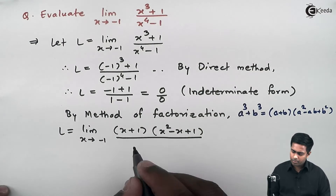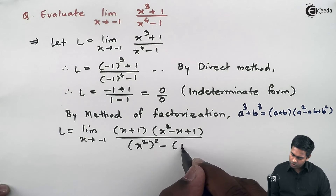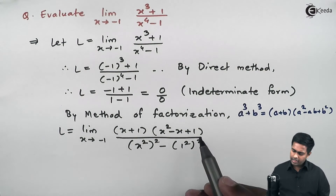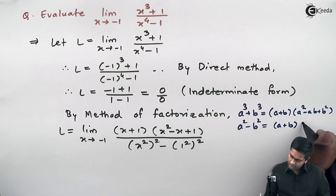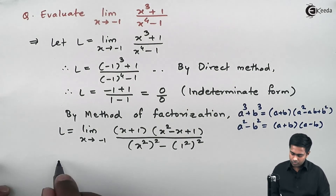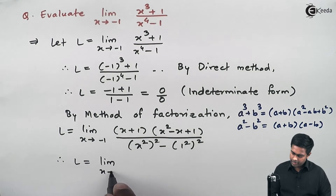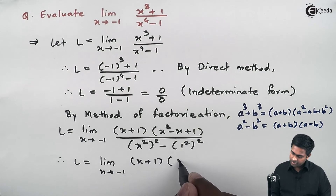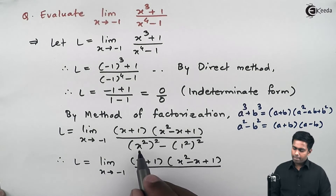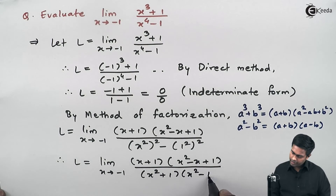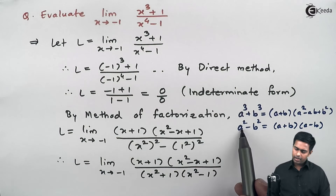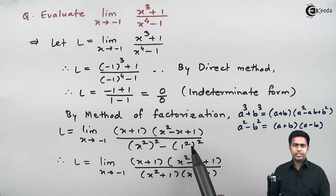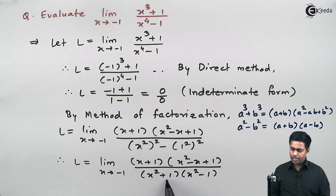For the denominator x⁴ - 1, I rewrite it as (x²)² - (1)², and apply the formula a² - b² = (a + b)(a - b). So x⁴ - 1 becomes (x² + 1)(x² - 1), where a is x² and b is 1.